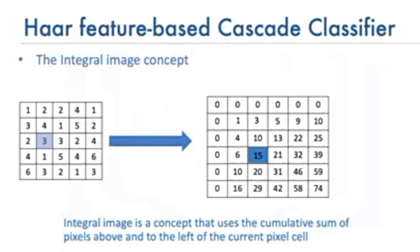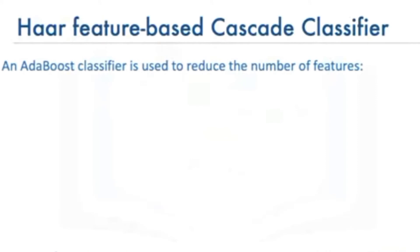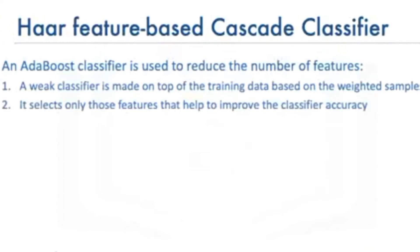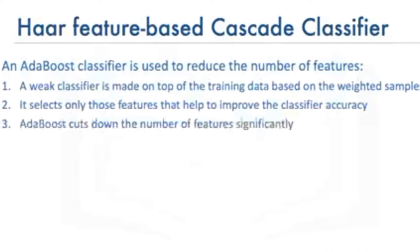We will get 15. The Viola-Jones paper used a 24 by 24 base window size as an example, and that would result in more than 180,000 features calculated in the integral image. The algorithm selects a few important features from a large set to give highly efficient classifiers by employing AdaBoost. The idea is to set weights to both classifiers and samples in a way that forces classifiers to concentrate on observations that are difficult to correctly classify. Therefore, it selects only those features that help improve classifier accuracy by constructing a strong classifier, which is a linear combination of weak classifiers. Using AdaBoost, it cuts the 180,000+ features down to about 6,000 features.